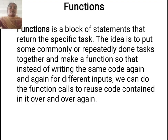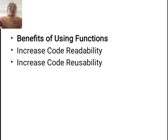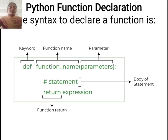Next one is functions. A function is a block of statements that performs a specific task. The idea is to put some commonly or repeatedly done tasks together and make a function, so that instead of writing the same code again and again for different inputs, we can do function calls to reuse code contained in it over and over again. Benefits of using functions: the first one is increasing code readability, and the next one is increasing code reusability. This is the Python function declaration: the first element is the keyword, we declare using the keyword 'def', next is the function name, next is the parameter, then the statement body, and finally the return expression.